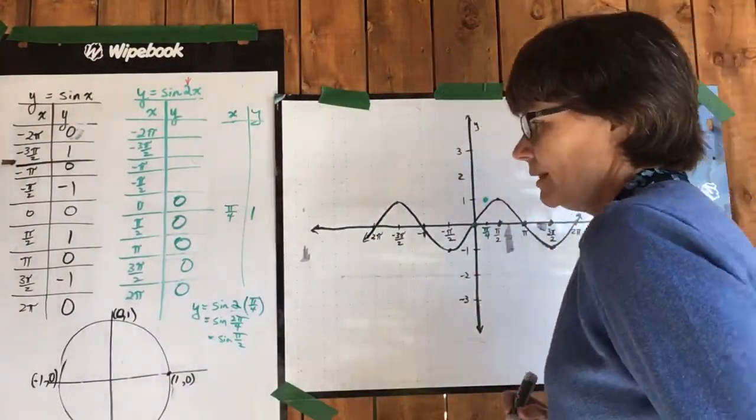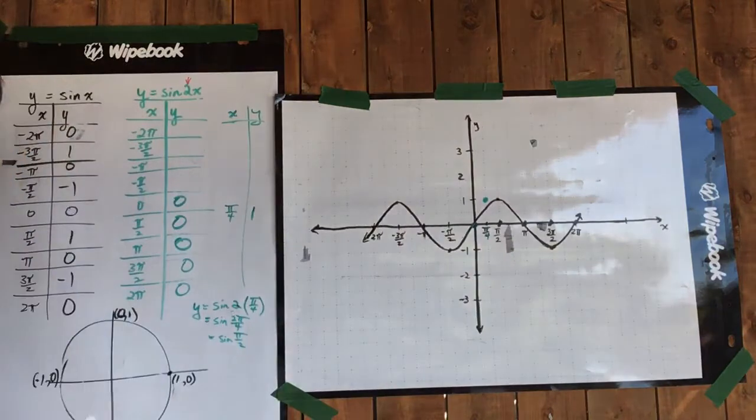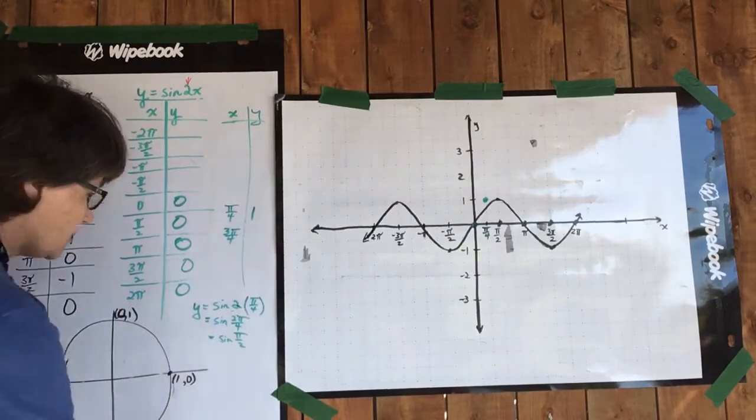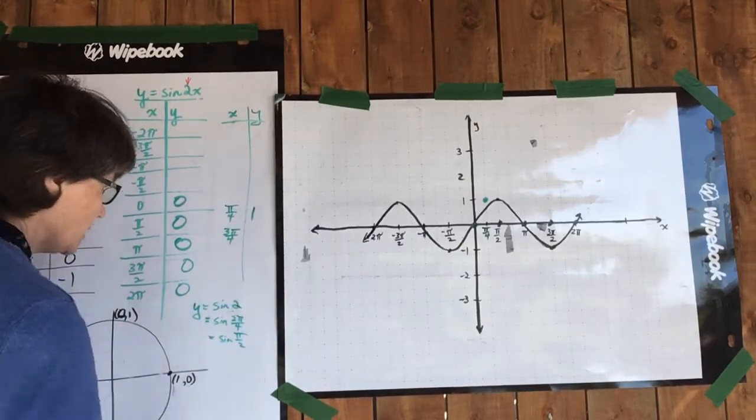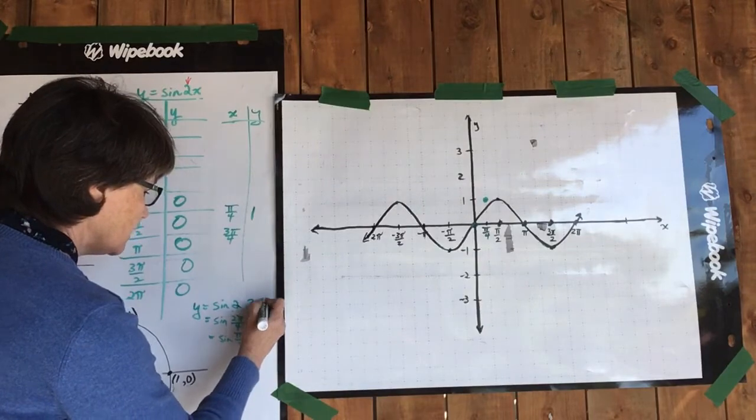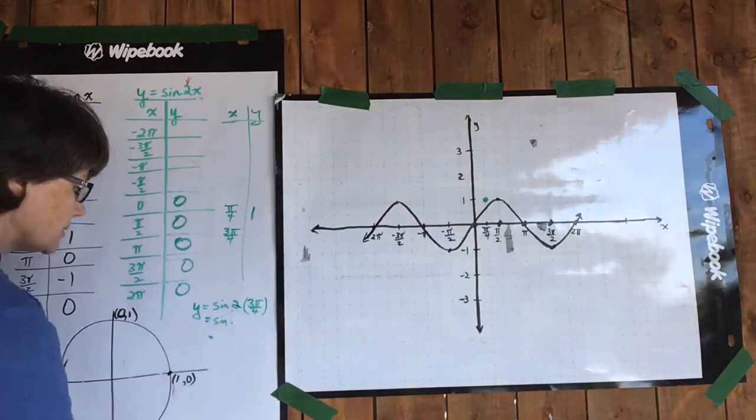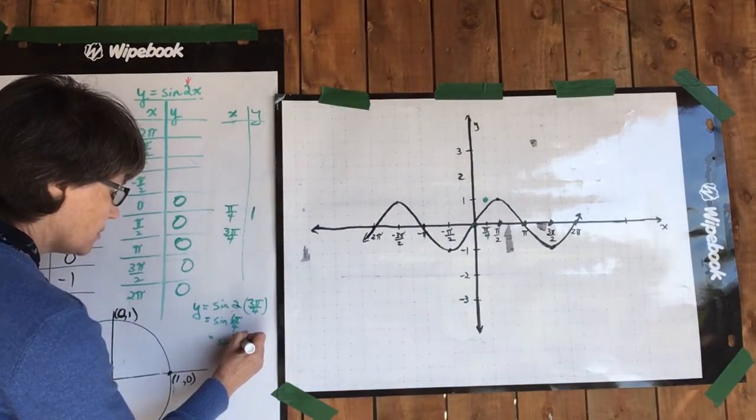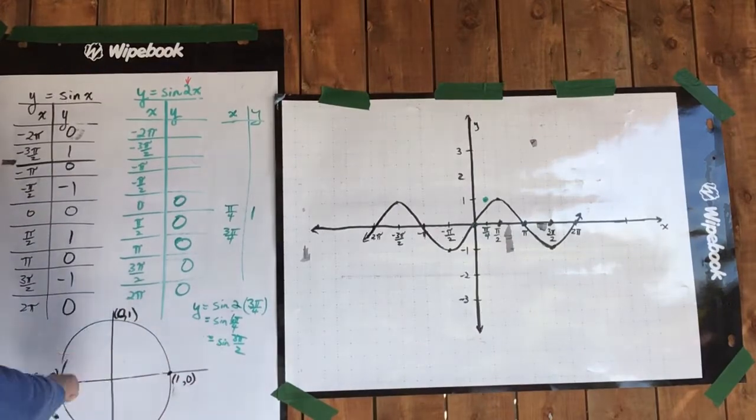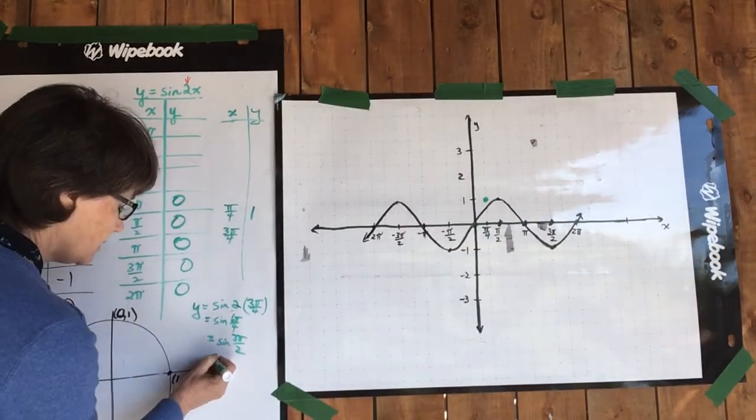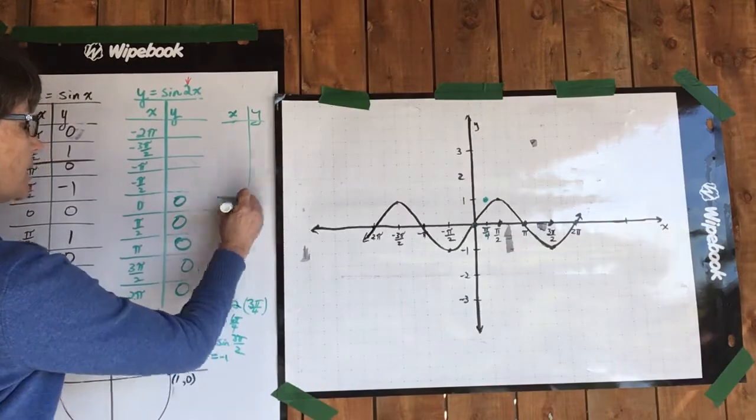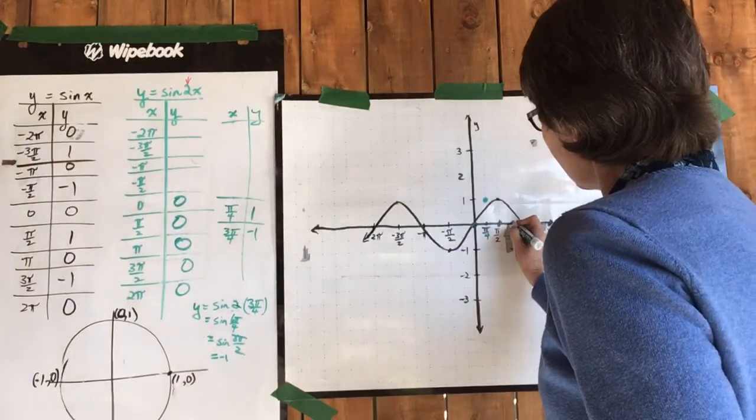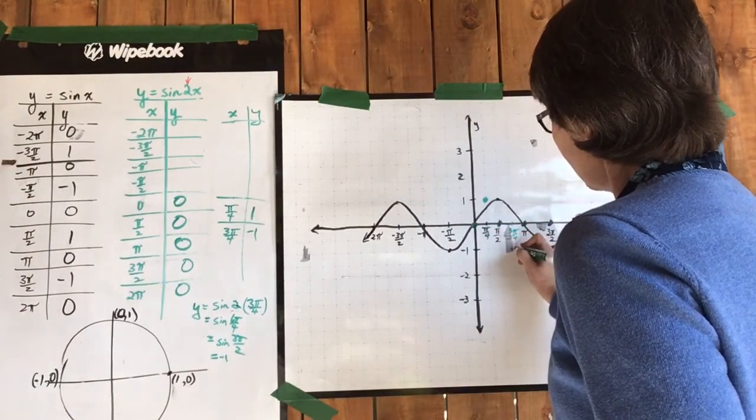Let's do this around the circle some more. Three pi over four would be another good one to have. Substitute that in here: three pi over four gives us six pi over four, which is the same as sine of three pi over two. Sine of three pi over two is negative one. So that gives us this ordered pair: three pi over four and negative one.